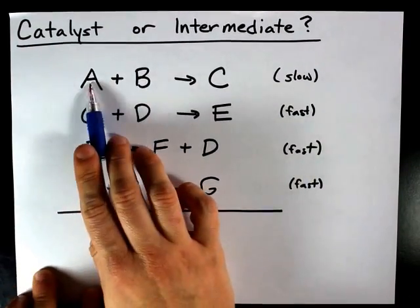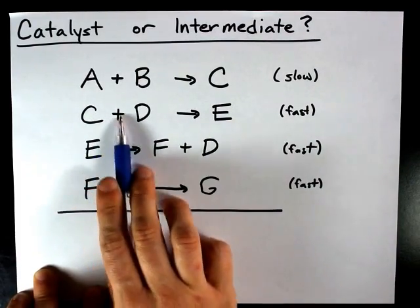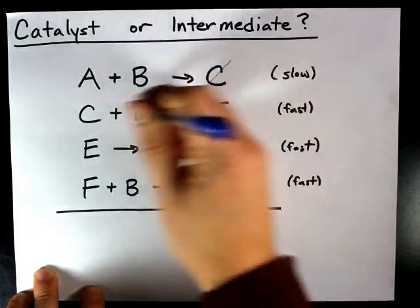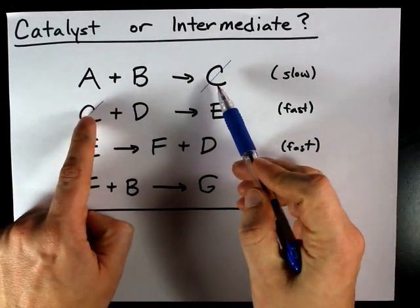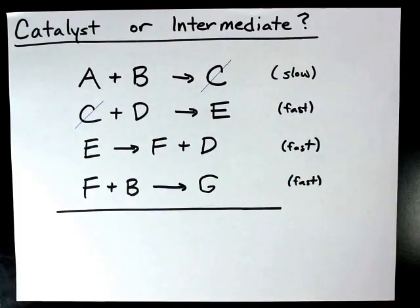What you'll notice is that A and B are combining to make C, but then C is immediately consumed to create E. That means that C will not be in the overall reaction. Put another way, they cancel out because you have one on the right, one on the left, similar to Hess's law.